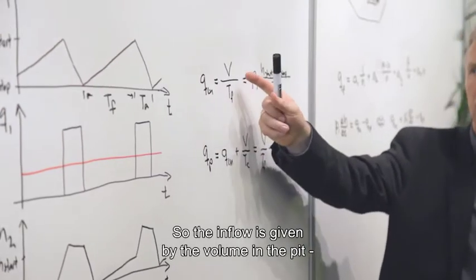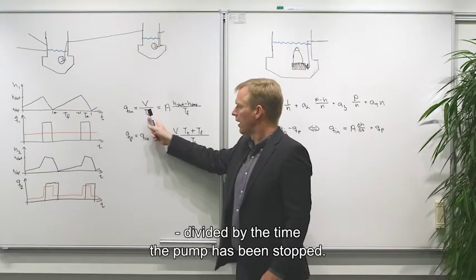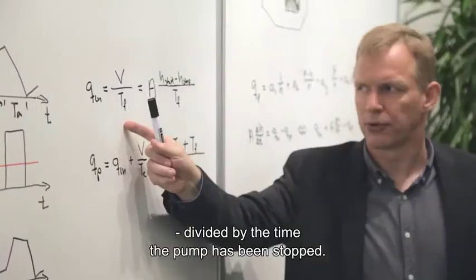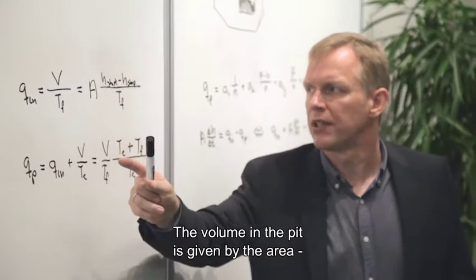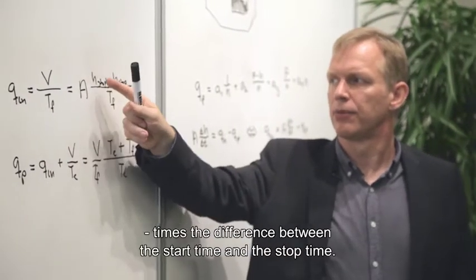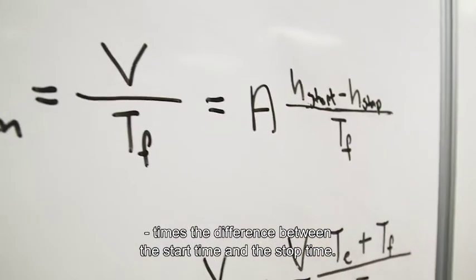So we have the inflow is given by the volume in the pit divided by the time the pump has been stopped. The volume in the pit is given by the area times the difference between the start time and the stop time.